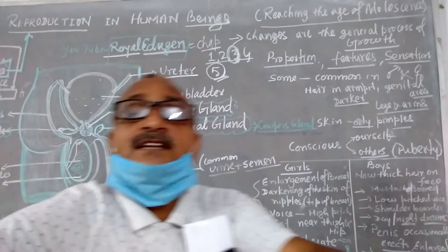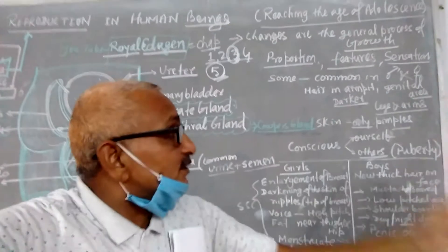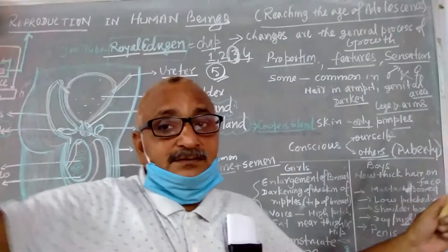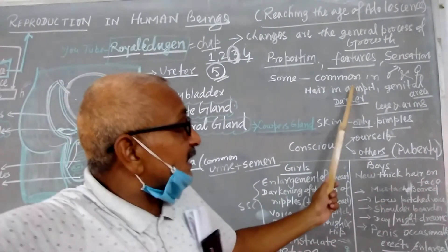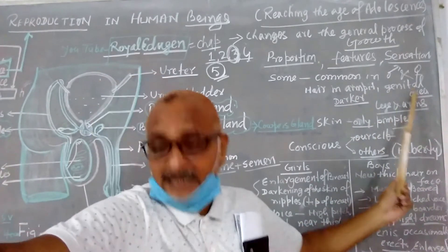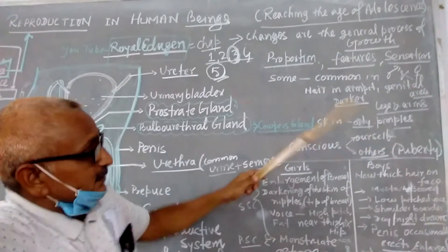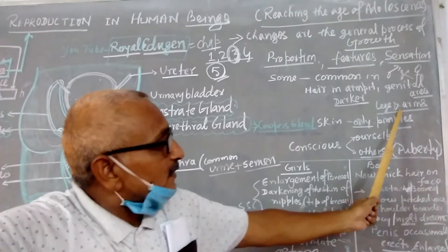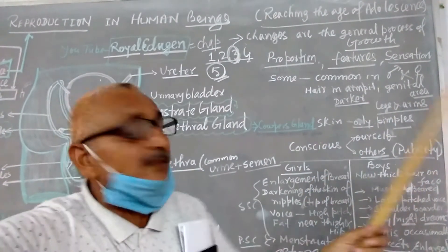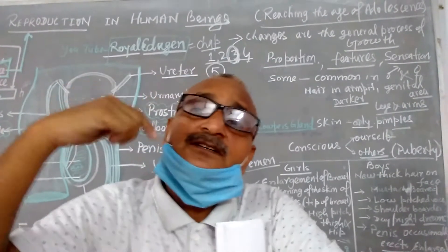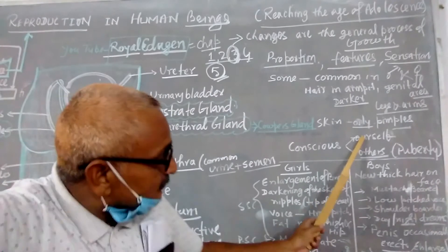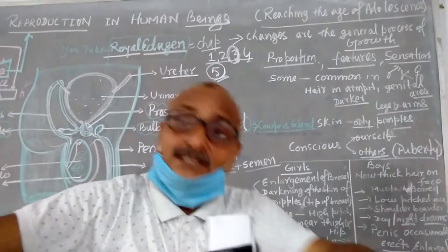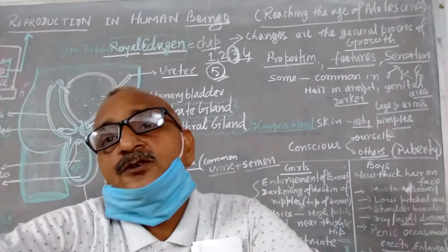Some common changes found in male and female, I am going to tell you here. The hair in the armpit. Armpit means between the arm and your body, there are some details, that is called armpit. So in armpit area or genital area, you get the hairs. Darker legs and arms, in legs and arms area, you get the hairs in that area. The skin becomes oily and pimples start coming there. So in this way, these are the common changes. Consciousness.